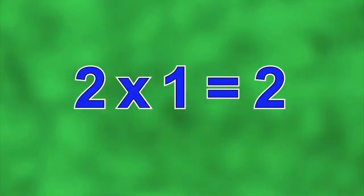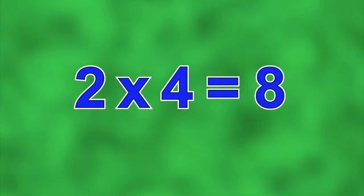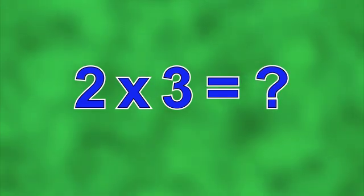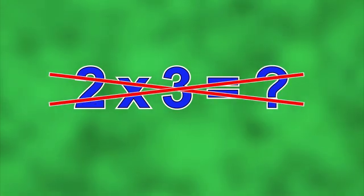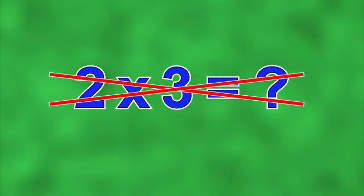Two times one is two. Two times two is four. Two times four is eight. And two times eight is 16. The pattern skips two times three. It looks like this pattern is exponential.